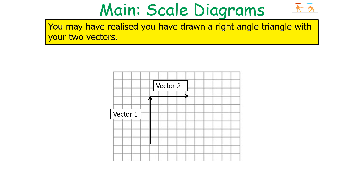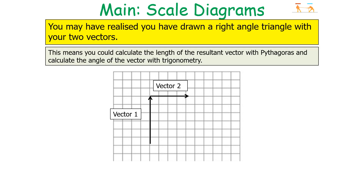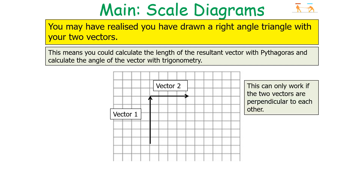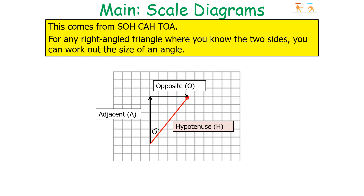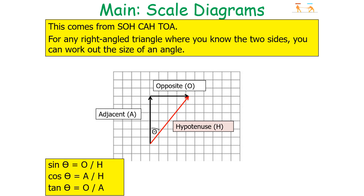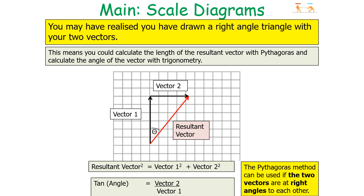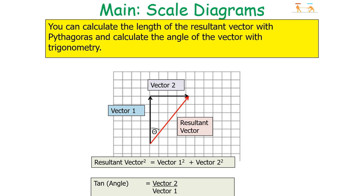You may have noticed that the previous example formed a right-angle triangle with the two vectors. This means you can calculate the length of the resultant vector using Pythagoras and calculate the angle using trigonometry — but only if the two vectors are perpendicular to each other. From Pythagoras: resultant² = vector 1² + vector 2². For the angle: tan θ = vector 2 ÷ vector 1, which comes from SOHCAHTOA — sin θ = opposite/hypotenuse, cos θ = adjacent/hypotenuse, tan θ = opposite/adjacent.